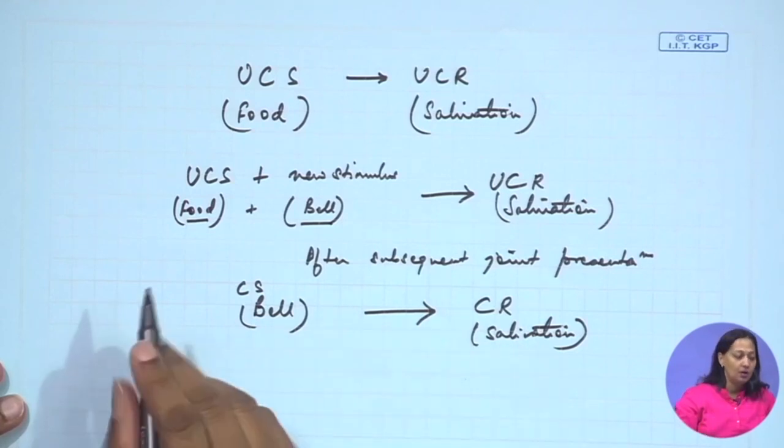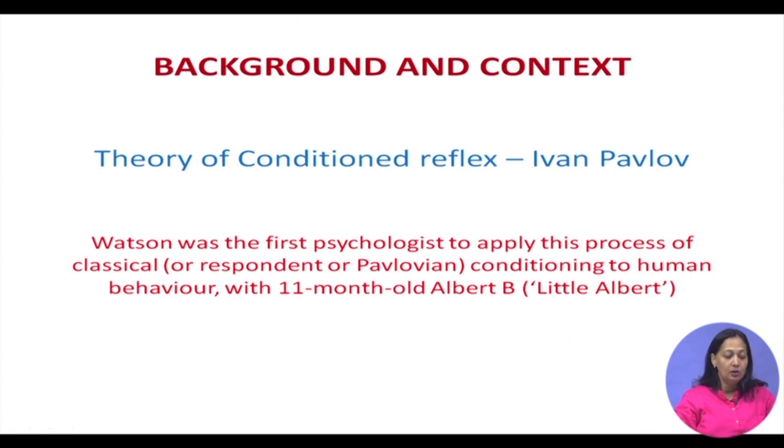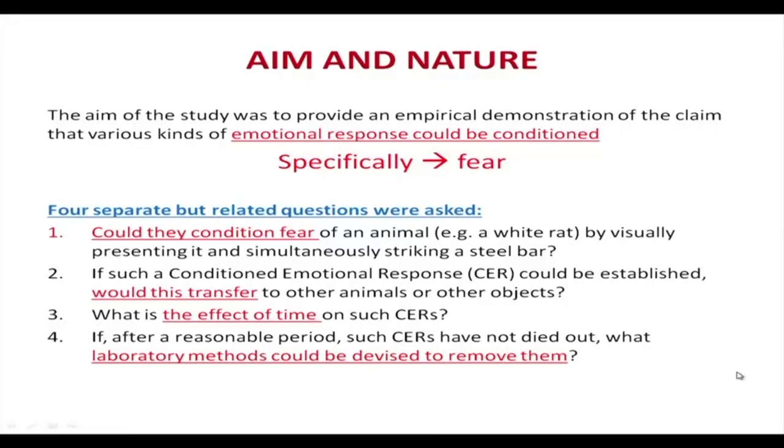This was Pavlov's experiment. Watson tried to show that human beings also learn in the same way, and he was the first to apply classical conditioning to human behavior. He tried to see through a child whether the child was also learning through conditioned behavior — specifically, he chose Little Albert and tried to see whether fear, which is an emotion, could be conditioned.